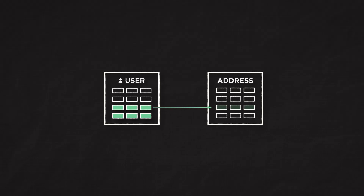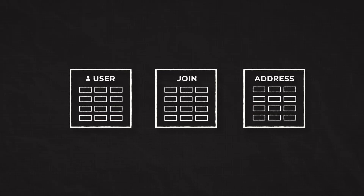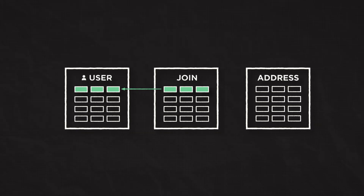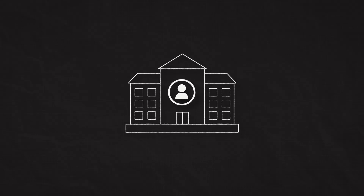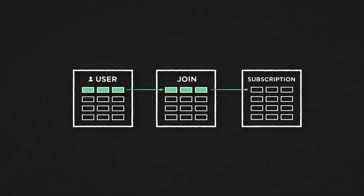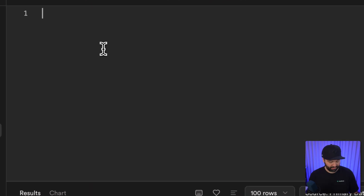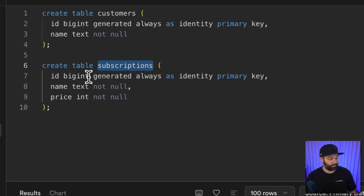Next up, we have many-to-many relationships, which are similar to one-to-many but where multiple rows from one table can reference multiple rows from another. This requires an additional joining table in the middle, where each row represents an instance of joining one row from the first table to one row in the second. This is common when associating a user with an instance of something — like a user enrolling in a course or subscribing to a SaaS product.